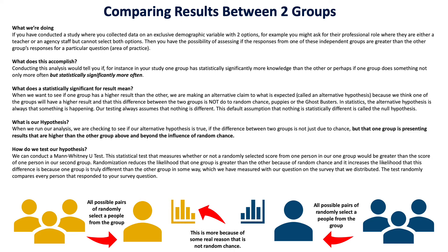When the result meets that threshold, we call that statistical significance — it has gone above and beyond the level of criteria needed to say this isn't due to chance. It's not because teachers just happened to have their Wheaties for breakfast or had extra coffee that day. They are different for a particular reason other than random chance. So above and beyond random chance, there is a statistically significant difference between these two groups, and we're trying to identify that.